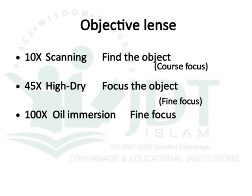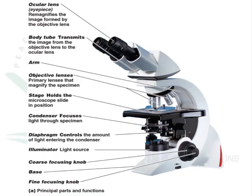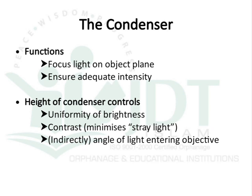A light microscope has objective lenses of 10x, 45x, and 100x. The 10x is used for scanning the microorganism or specimen and for coarse focusing; 45x is used for fine focusing; and 100x oil immersion is used for exact fine focusing or to enlarge the view of objects. The role of the condenser is to focus light on the object plane and ensure adequate intensity. The height of the condenser can control uniformity of brightness and contrast, minimize stray light, and indirectly control the angle of light entering the objective lens.